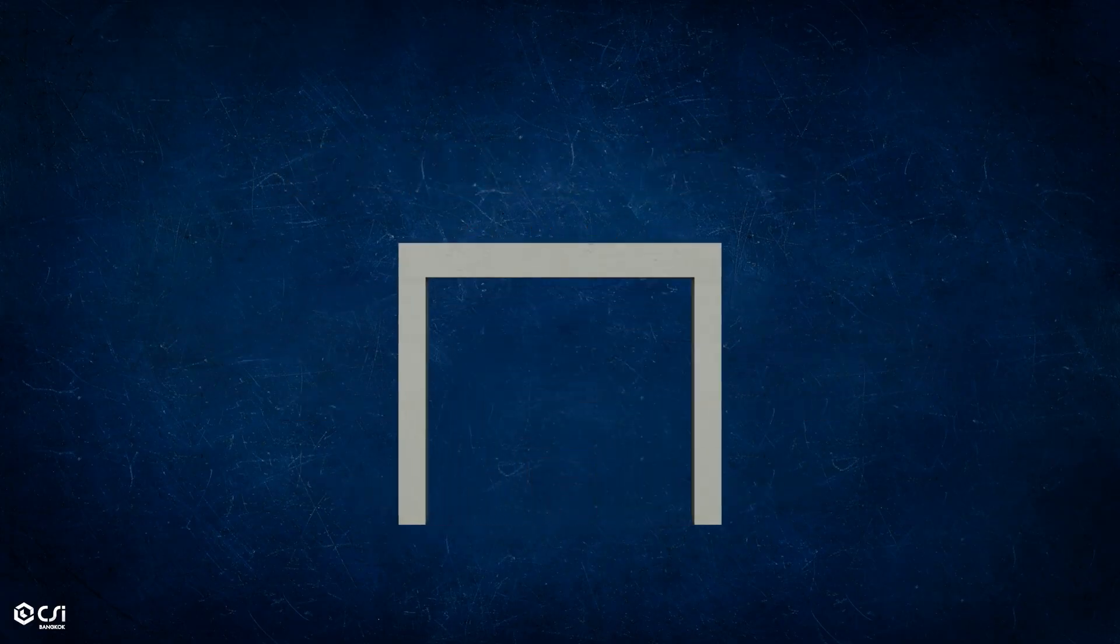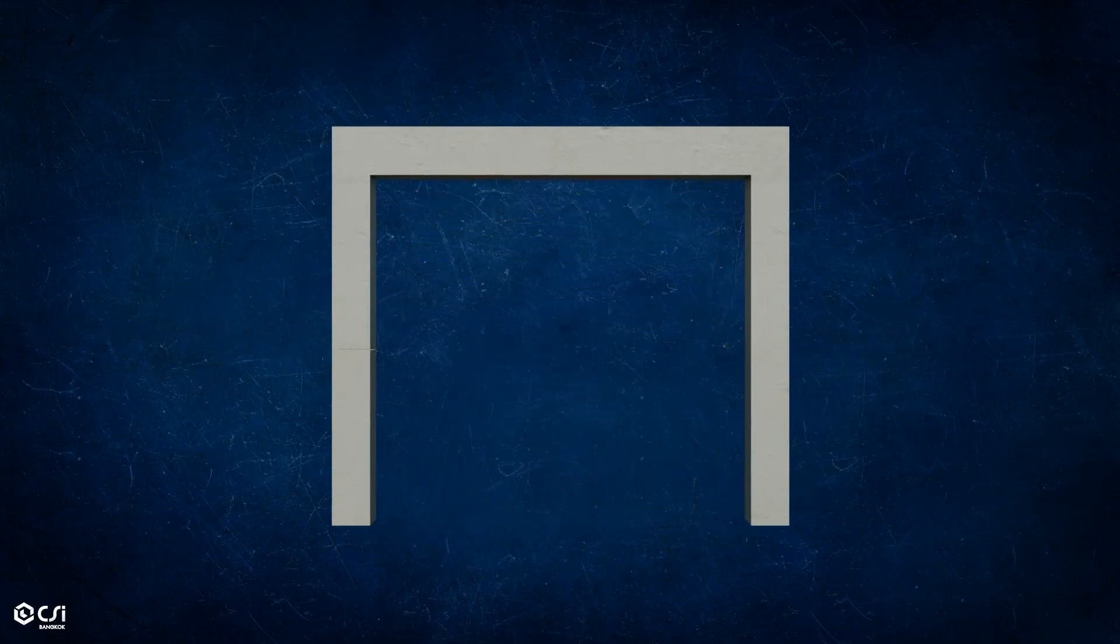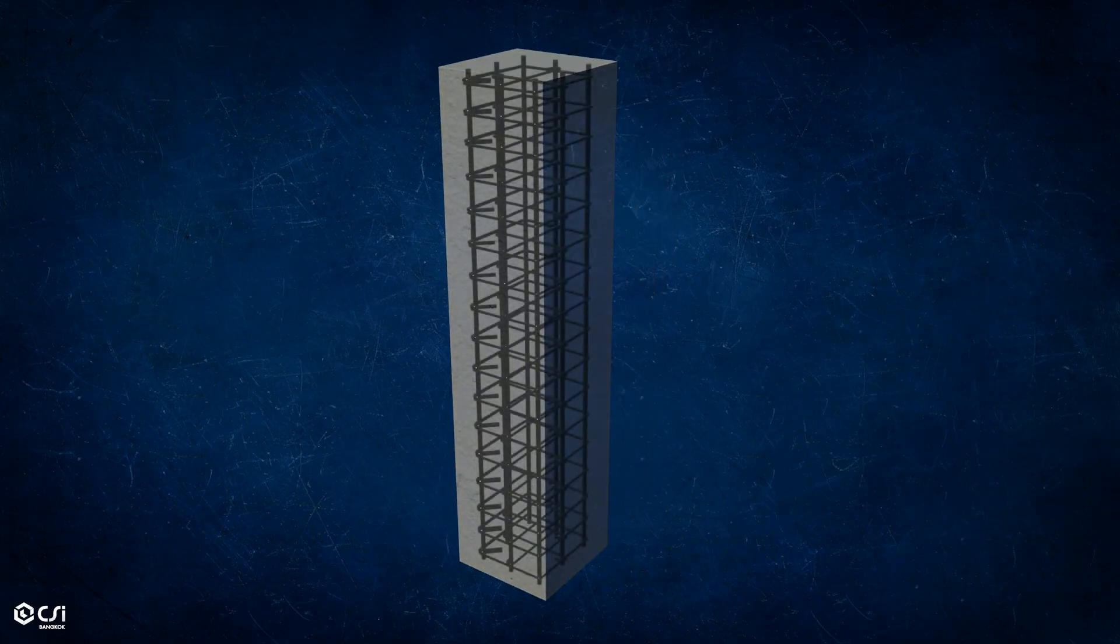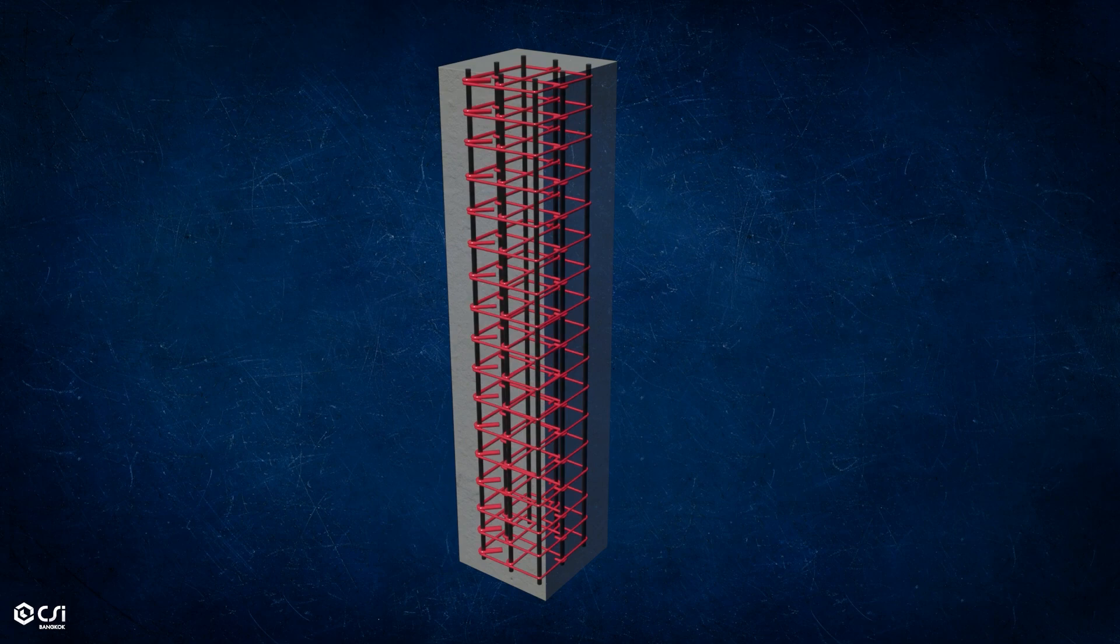For example, consider a column with vertical reinforcement and transverse reinforcement with ties. The ties and transverse reinforcement provide confinement to the concrete.